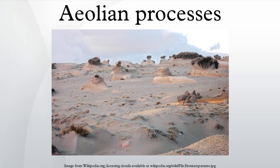Aeolian turbidity currents are better known as dust storms. Air over deserts is cooled significantly when rain passes through it. This cooler and denser air sinks toward the desert surface. When it reaches the ground, the air is deflected forward and sweeps up surface debris in its turbulence as a dust storm. Crops, people, villages, and possibly even climates are affected by dust storms.